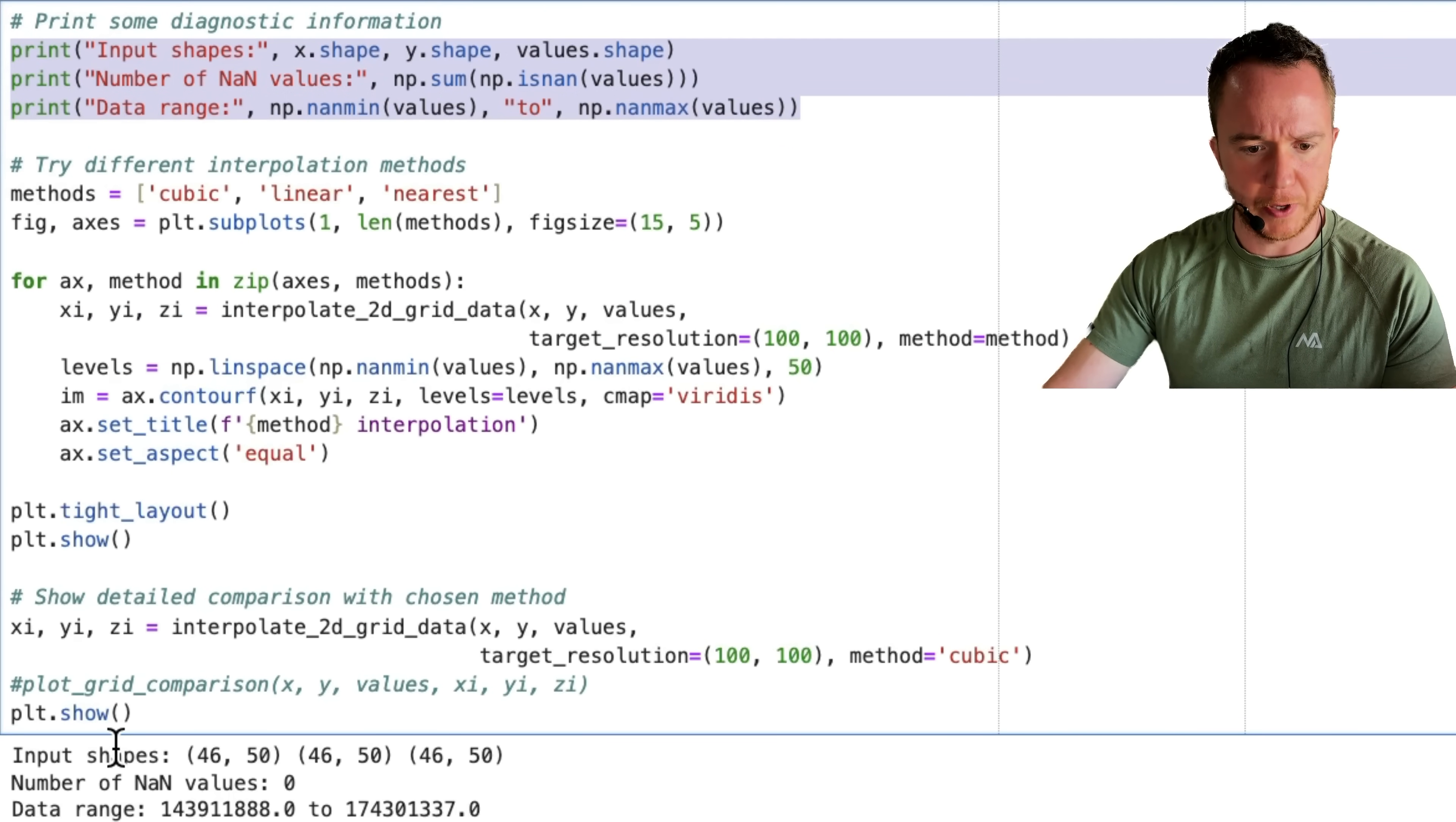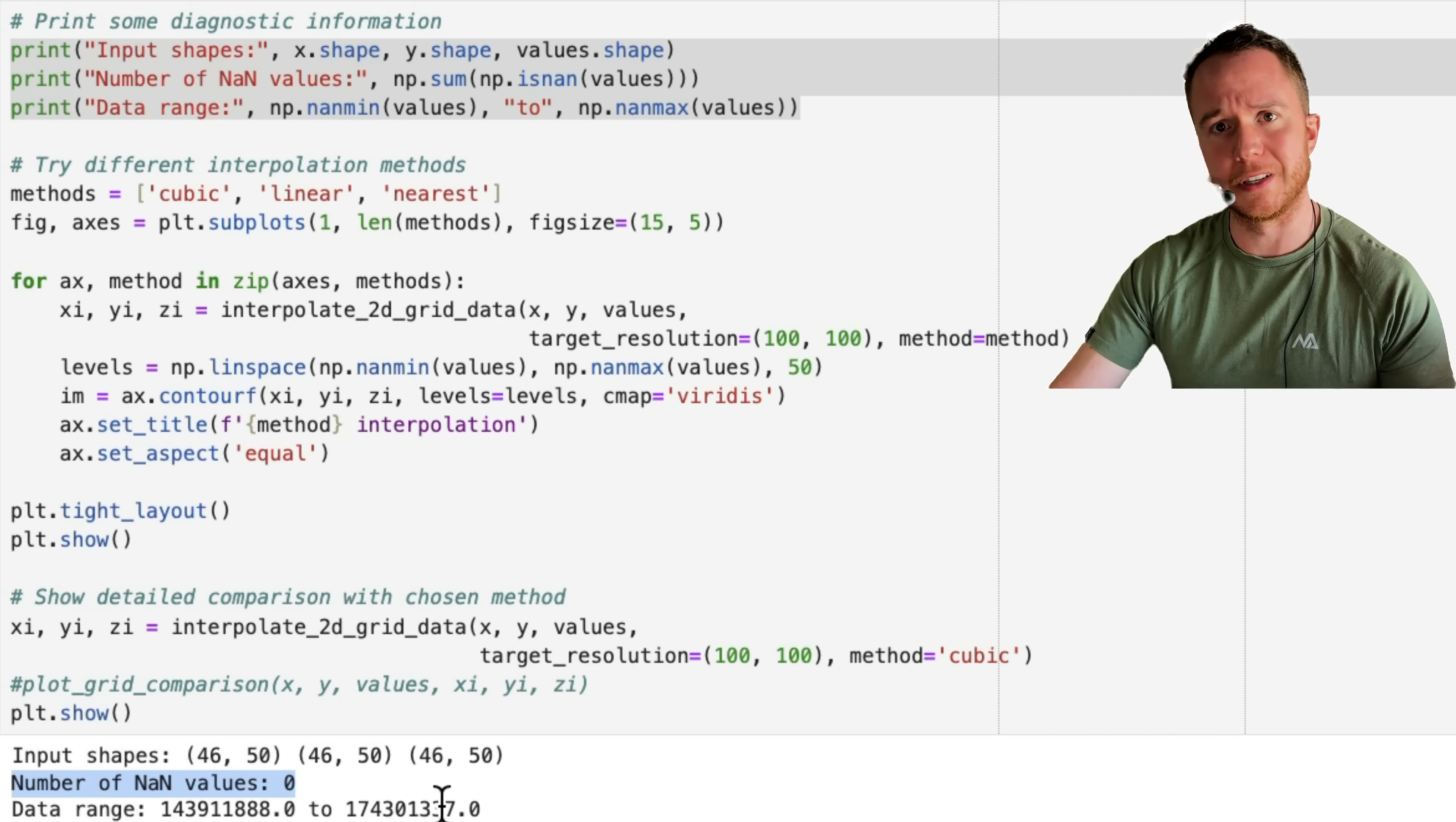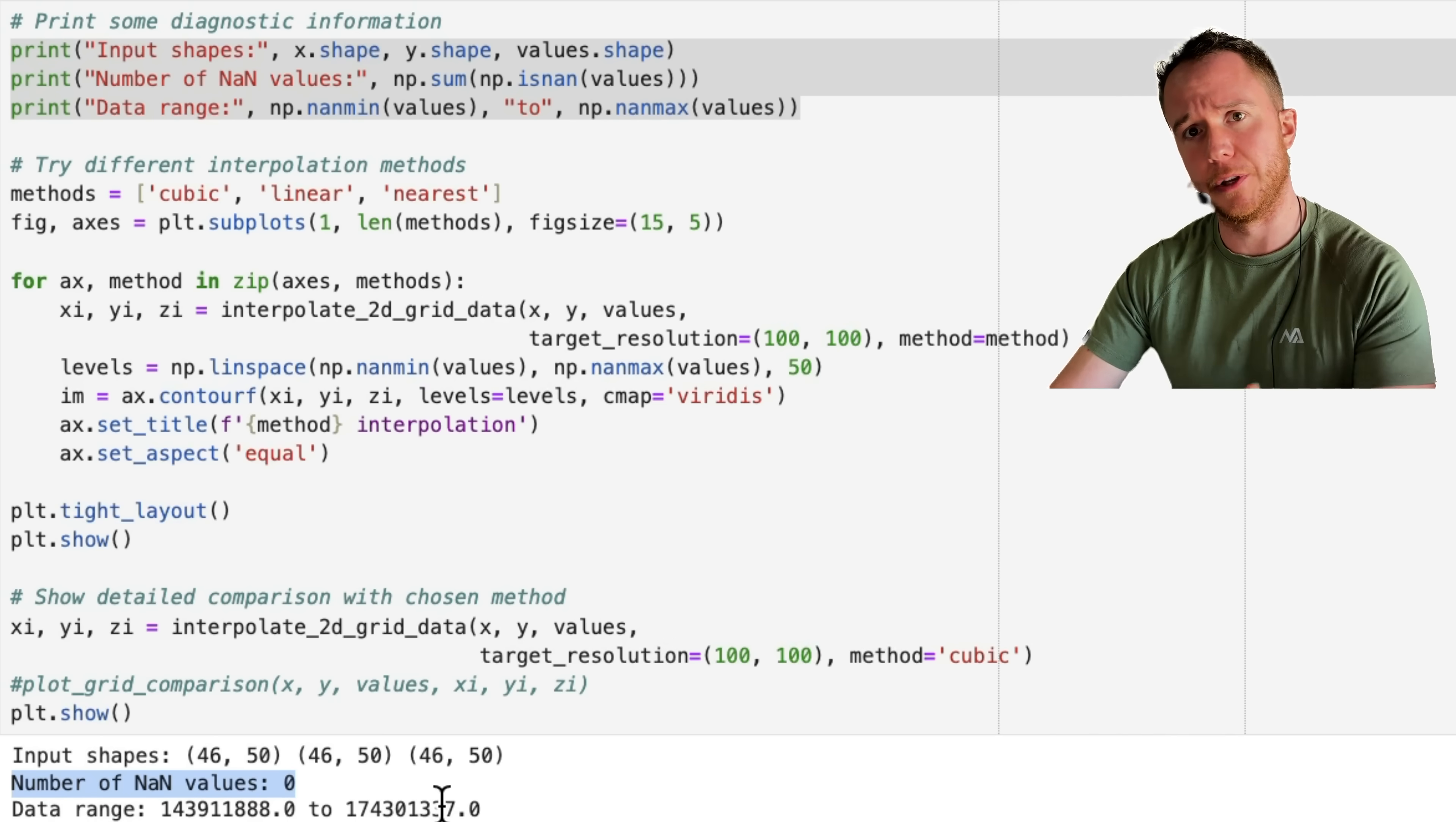Additionally, it printed some diagnostic information that we can see down here, so the input shapes are all the same, number of none values in the input data is zero, and the data range also seems to be fine. So the problem that we see with the holes is not from the input data, it's actually from the interpolation scheme.